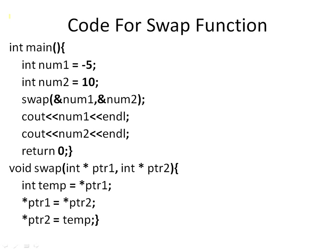This is the code — it is exactly what we saw earlier. Num1 is minus 5, num2 is 10. I make a call to the swap function here, then print out num1 and num2 after that. This is my swap function. Here I save the value of the pointee of PTR1 in temp, do the first swap where the pointee of PTR1 gets the value of the pointee of PTR2, and the pointee of PTR2 gets the value of temp. I'm going to code-walk through line by line so you understand exactly what's going on inside the memory map.